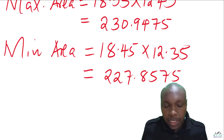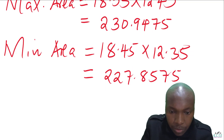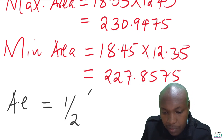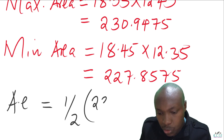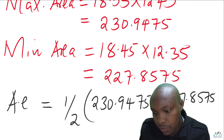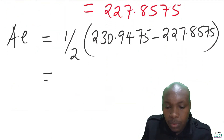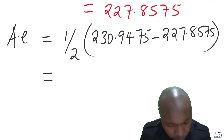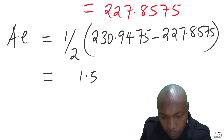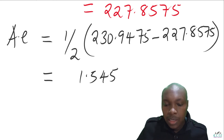Now we can find the absolute error. As indicated earlier, it is one half of (maximum area minus minimum area): that is one half of (230.9475 minus 227.8575). Working this out gives an absolute error of 1.545 in the calculation of the area.